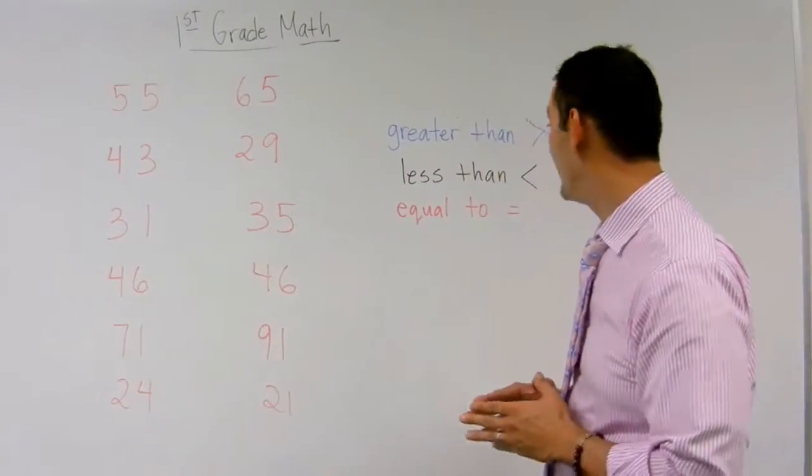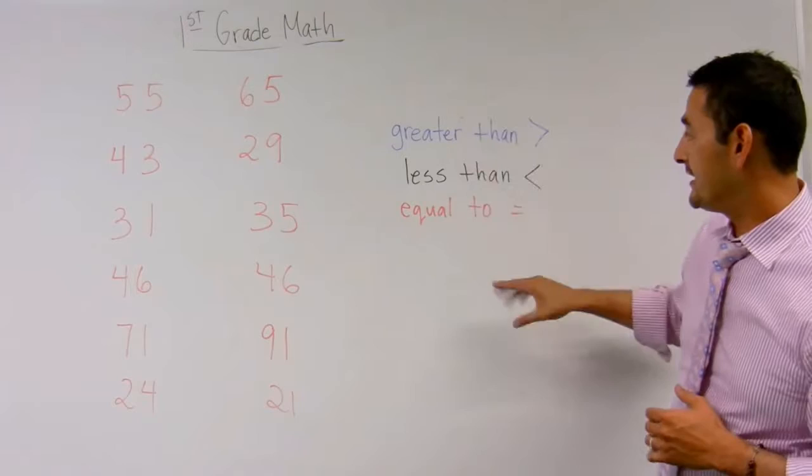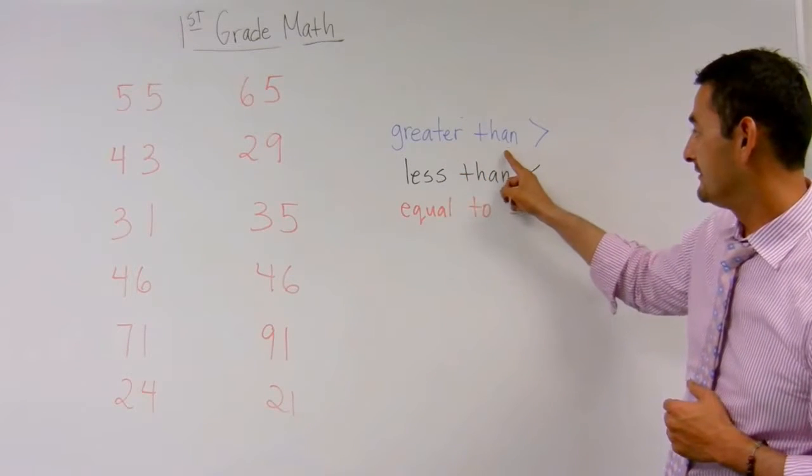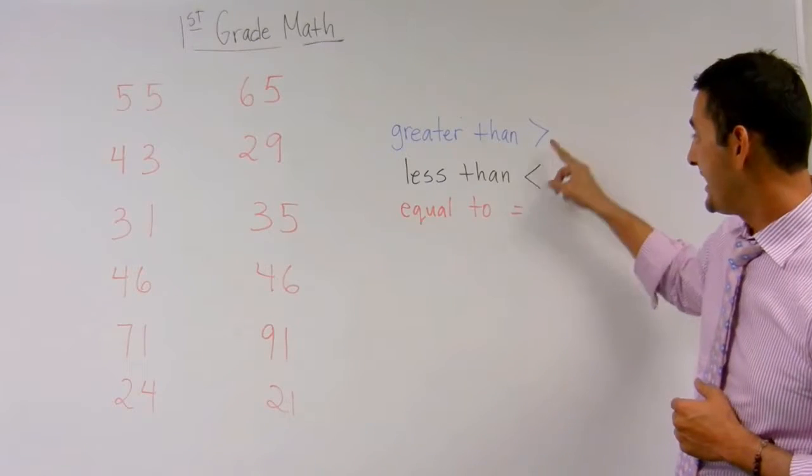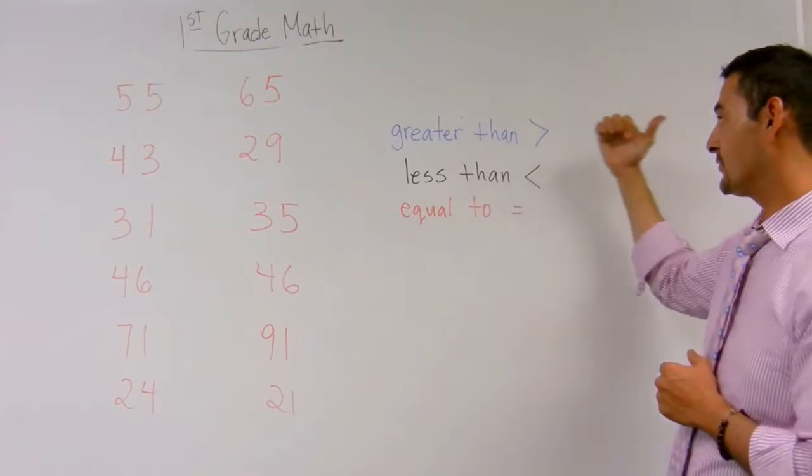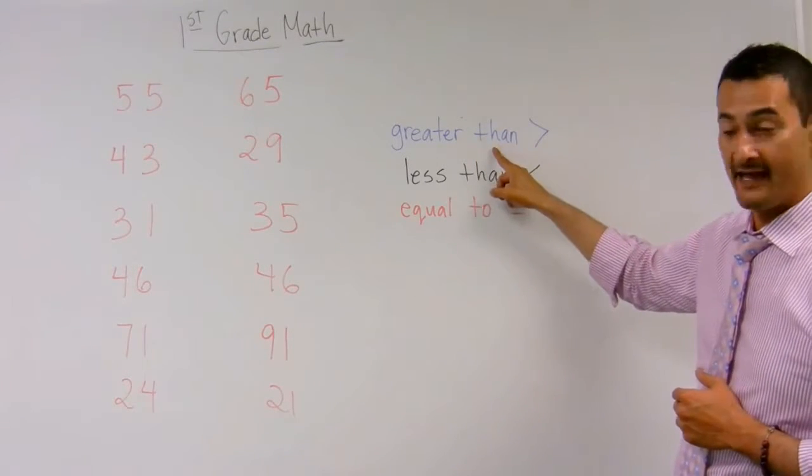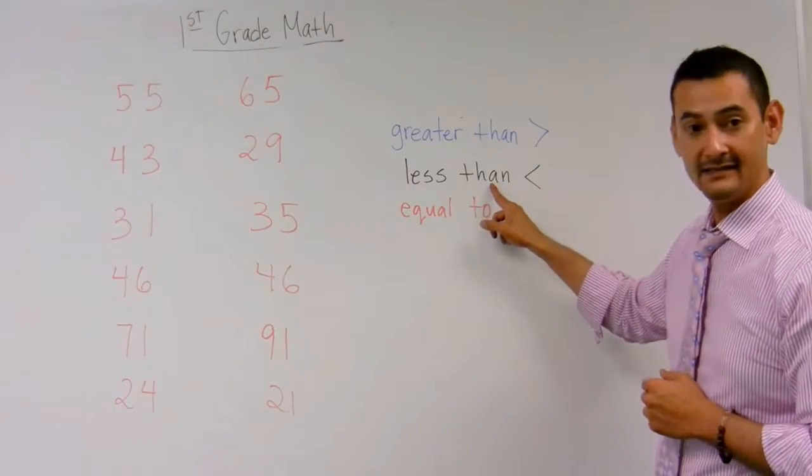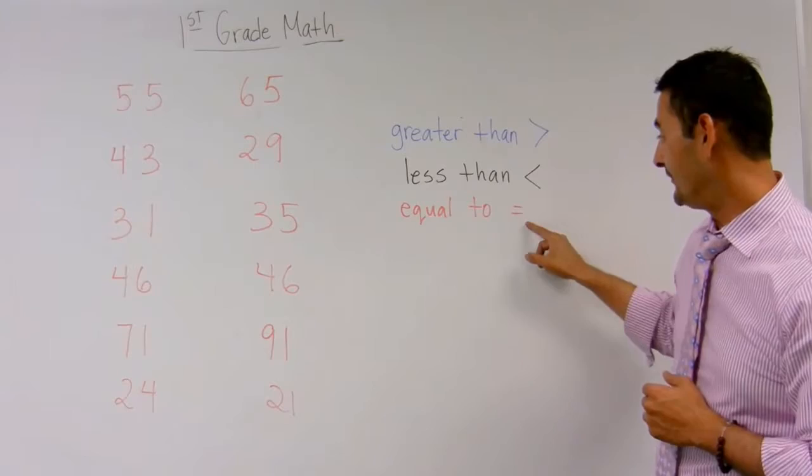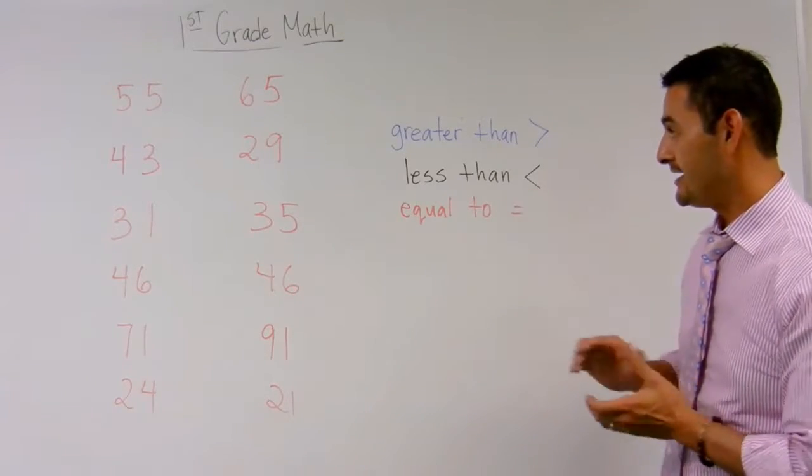And what we're going to be talking to you about today are these three concepts: greater than, less than, or equal to. This symbol pointing to the right means greater than. This symbol pointing to the left means less than. And this symbol means equal to.